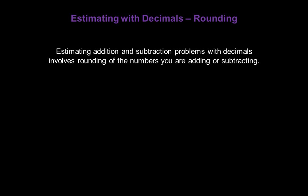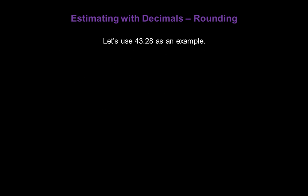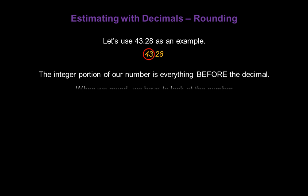Estimating addition and subtraction problems with decimals involves rounding the numbers that you're adding or subtracting. So let's take a moment to refresh ourselves on the rules for rounding. When we round decimal numbers, we typically round to the nearest integer. Let's use 43.28 as an example. The integer portion of our number here is everything before the decimal, so it's the number 43.